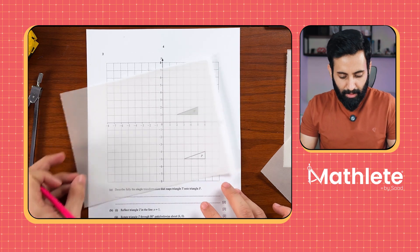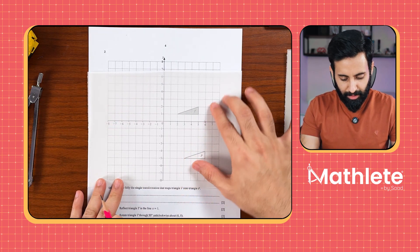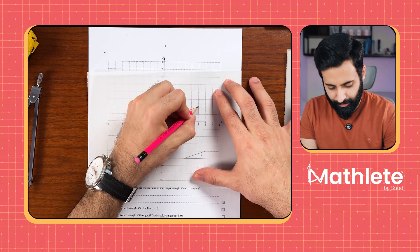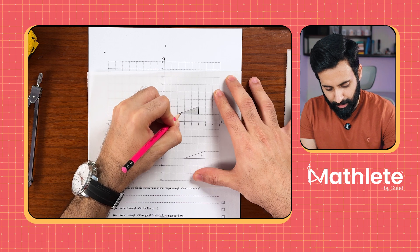Trace the shape that you want to rotate, that's shape T. Here it is. This is the shape that we want to rotate.